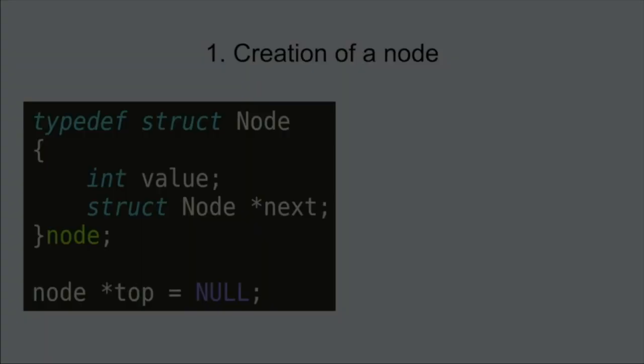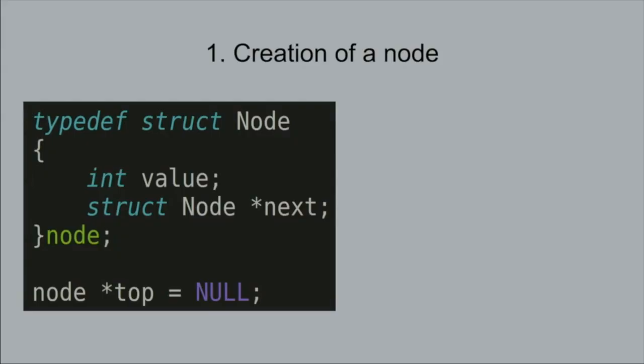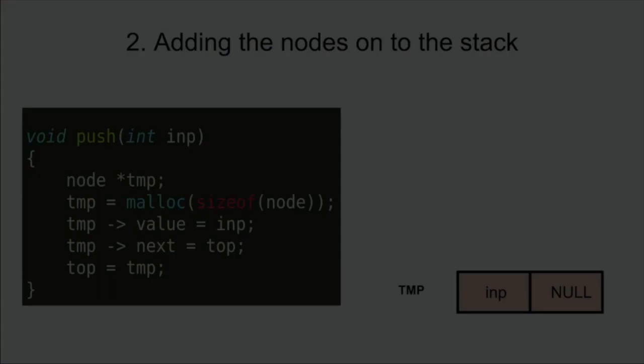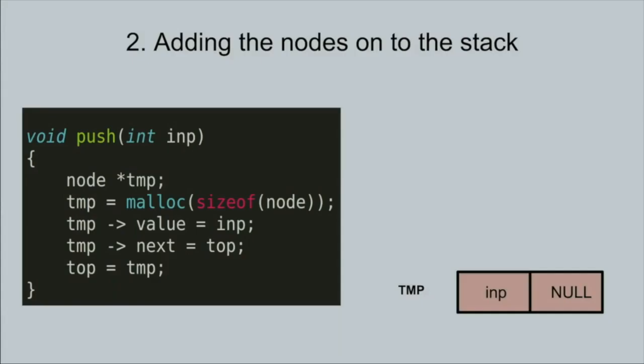Now we will see how to implement a stack using linked lists in C language. First, let's see how to create a node. We declare a structure node which has two elements: one is the integer value which it will hold, and the other is the pointer which will be used to point to the next node. Here is how the top node will look on creation.